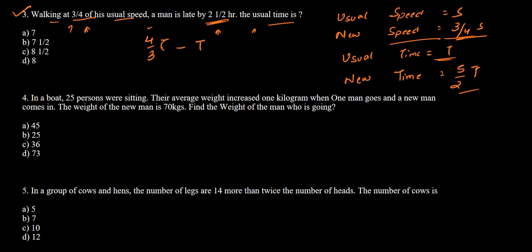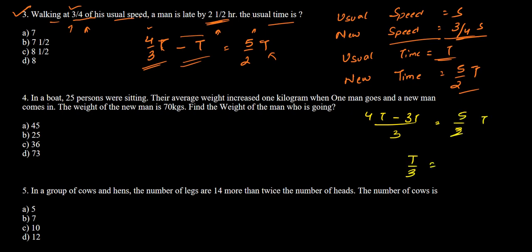The old time is t and the new time is 4/3 t. The difference — which equals the time the man was late — is 4/3 t minus t, which gives t/3. This equals 5/2, since the man was late by 2 and a half hours (not 5/2 t — the 5/2 is the actual time in hours, not a multiple of t).